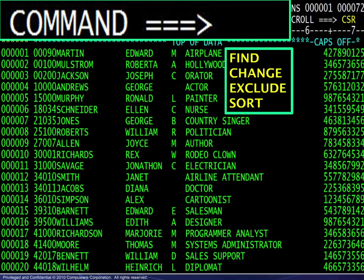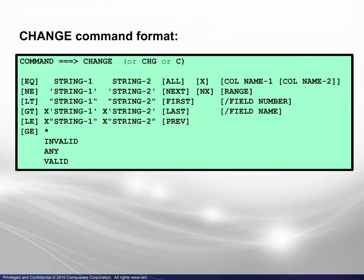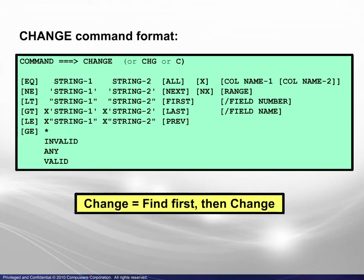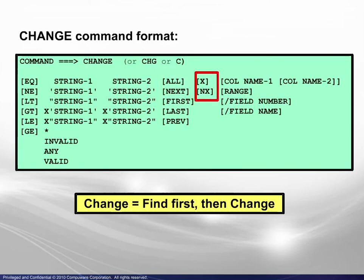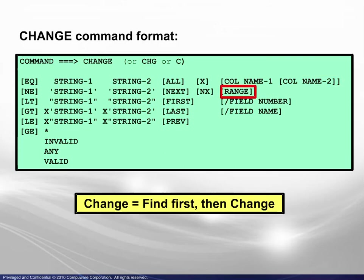The next four commands are probably the most powerful and most frequently used of the entire command set. Here we see the basic format of the change command. Since the change command is actually find first, then change, most of the parameters seen here apply to the find command as well. Some of the parameters are like their counterparts in the ISPF editor — among these are the direction of the search and whether or not to change all, which lines to search (excluded, non-excluded, or all), starting column and range of columns, and range of lines.